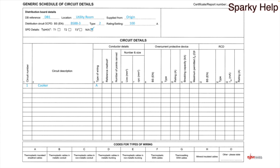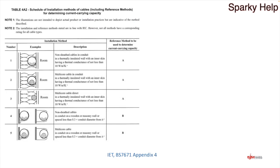Now we have the reference method. The reference method comes from either the on-site guide or BS 7671 — the on-site guide is a guide to that book. Unless you know them off the top of your head, you look at how the cable happens to be installed. If it's installed using more than one method, you put both methods down. You need to go and look them up — they come from appendix 4 of the regulations BS 7671 by the IET. There are about four or five pages of drawings with written descriptions, and the reference method is on the right-hand side: A, B, or whatever it happens to be.